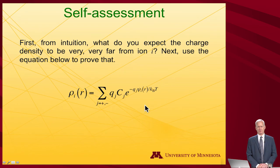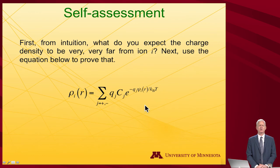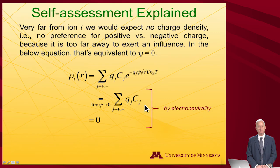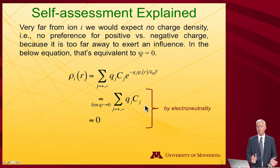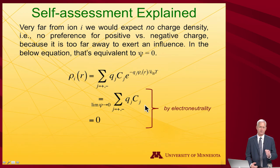A self-assessment: what do you expect the charge density to be as R grows toward infinity, and does the equation satisfy that limit? The answer is that there should be no net charge density — equal amounts of positive and negative charge — because infinitely far from a test charge there is no preference for any particular ion.